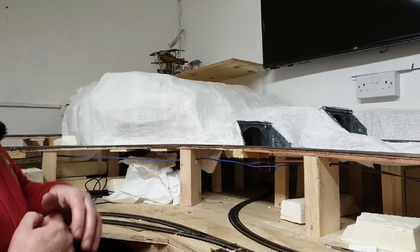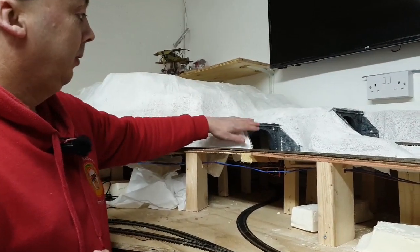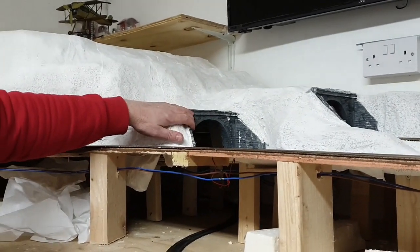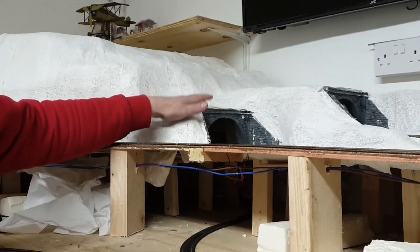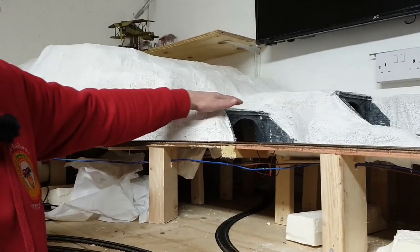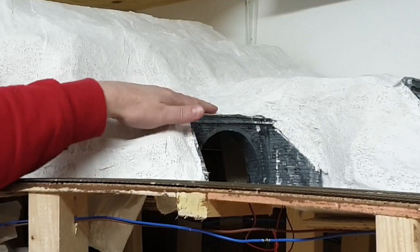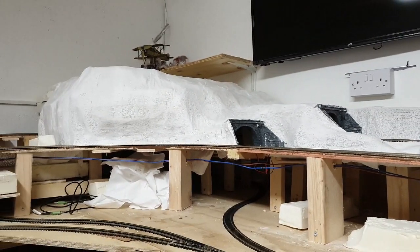As you can see on here now I've put a couple of layers of the plaster bandage on. I put the tunnel mouths in. I had to remove these and put them back in again because when the bandage went on it made the tunnels warp slightly so the trains were catching on the way through so I've reseated them. You can see I've put the plaster bandage up to the edge of the tunnel mouth. What I can do at a later stage is trim that back so it's a flusher fit, it's going to be hit with scenery anyway.